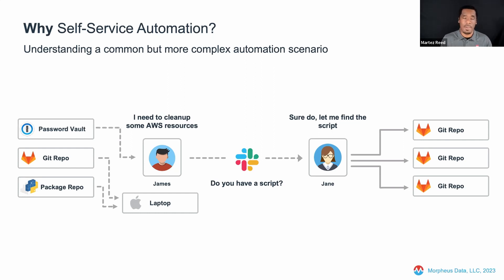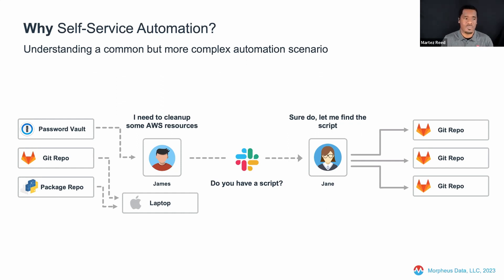And then finally, James needs to grab the password from the password vault. There's a possibility James might not have known where the credentials were in the password vault — so he might have pinged Jane once again asking what credentials to use for this script against the environment. So once again, another interaction with Jane is necessary to fulfill a request that, while automated and scripted, is not the easiest thing to simply hand over.